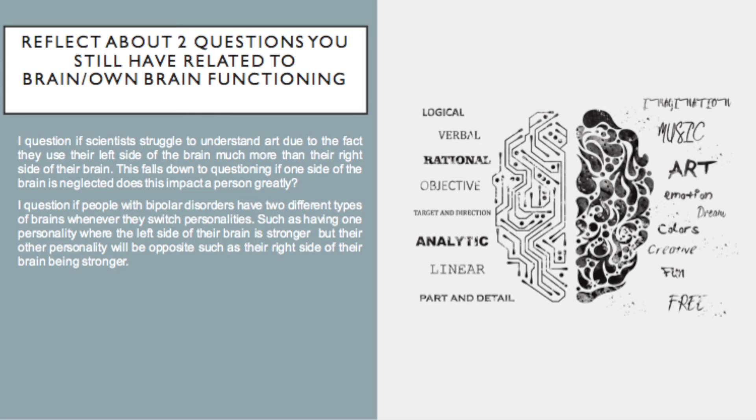I question if people with bipolar disorders have two different types of brains whenever they switch personalities. Such as having one personality where the left side of their brain is stronger, but their other personality will be the opposite, such as their right side of their brain being stronger.